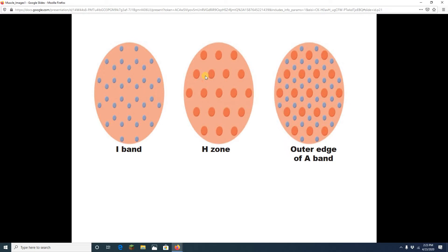If we slice it in the H-zone, we will see nothing but thick myosin filaments. If we slice it at the outer edge of the A-band, that's where we have the overlap, and that is very important for contraction. I see both my thin actin and my thick myosin here.